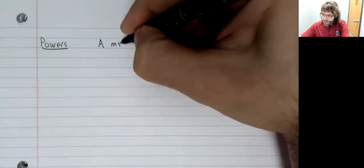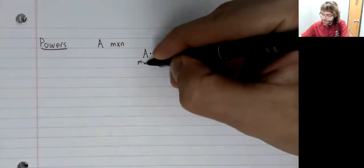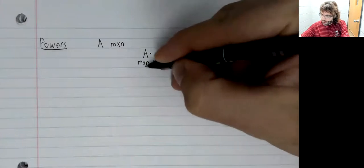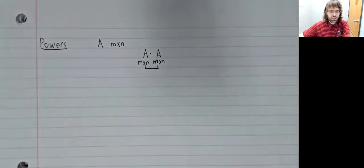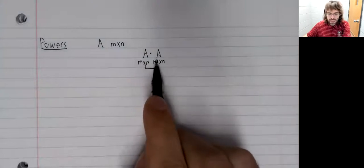if A is M by N, and you try to multiply A by itself. Remember, we can only do this if those inner dimensions match. So A squared is only defined if N equals M,